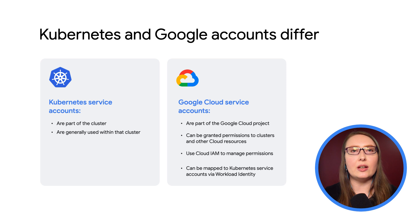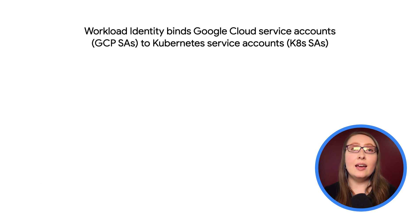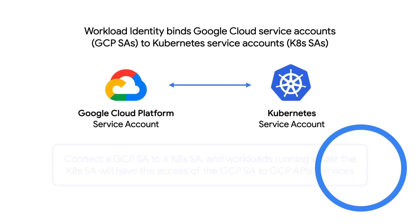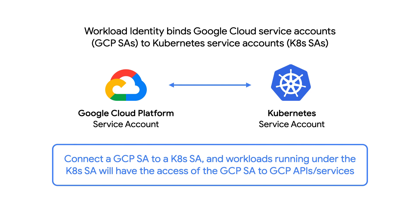So what if you have a situation where a workload running within GKE needs access to some other Google Cloud resource like BigQuery? To get permissions all the way from a workload within Kubernetes to other resources running in Google Cloud, in the most granular way possible, another concept is needed to tie the two service account concepts together. That concept is workload identity. Workload identity can be used to automatically connect a Google Cloud service account to a Kubernetes service account, so that any workloads represented by the Kubernetes service account will have the access described by the GCP service account in order to use any Google Cloud APIs, products, or services that workload might need.